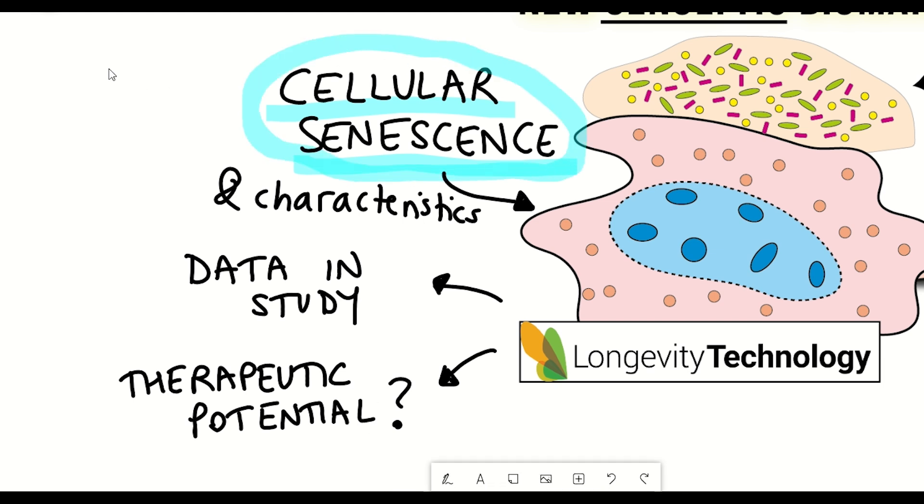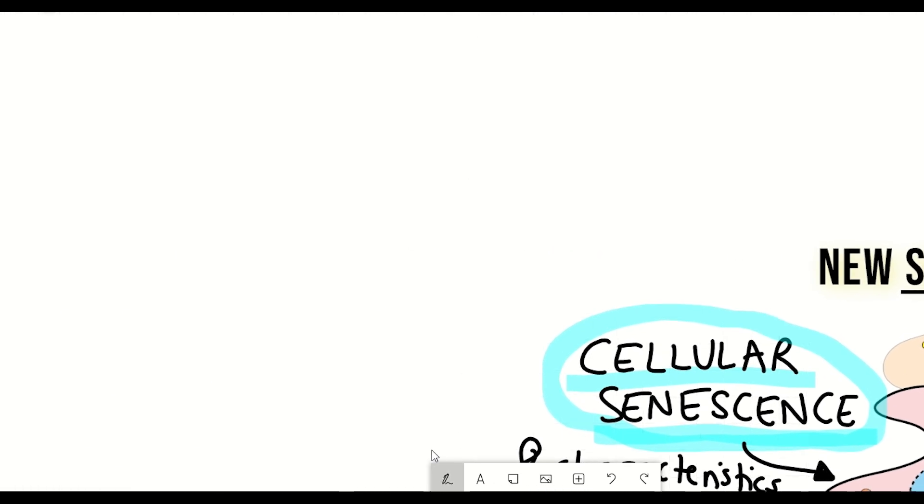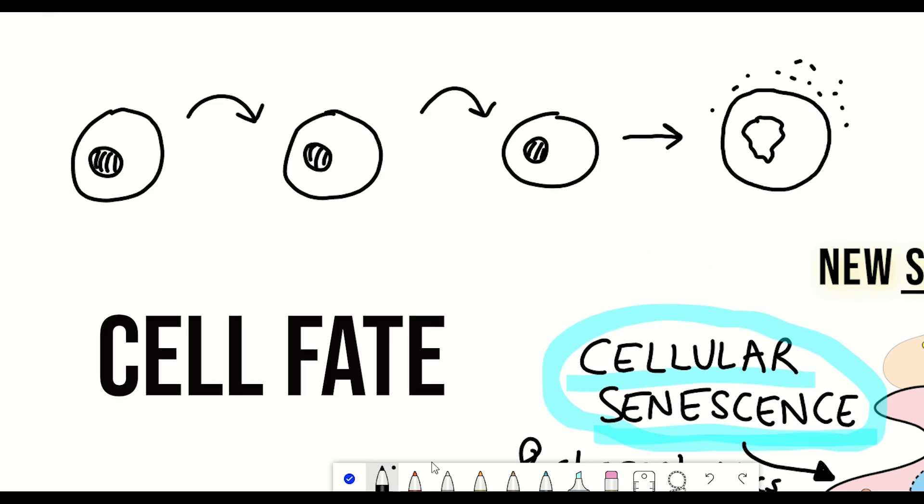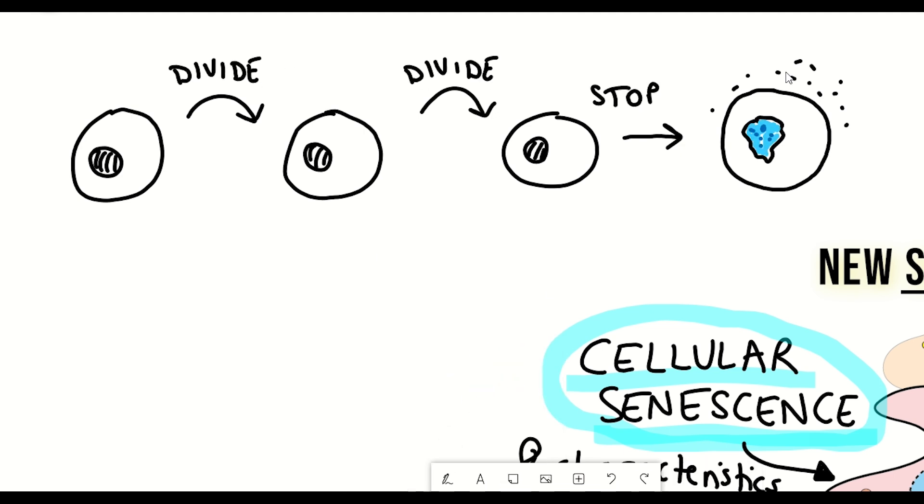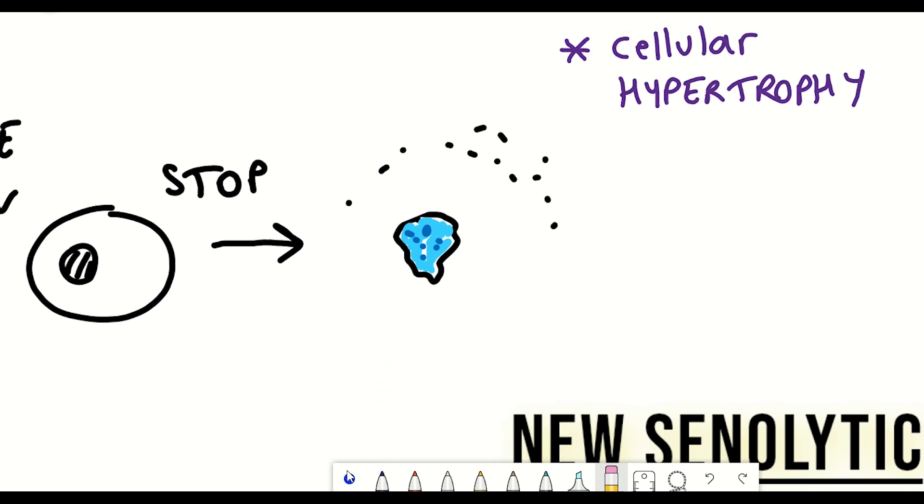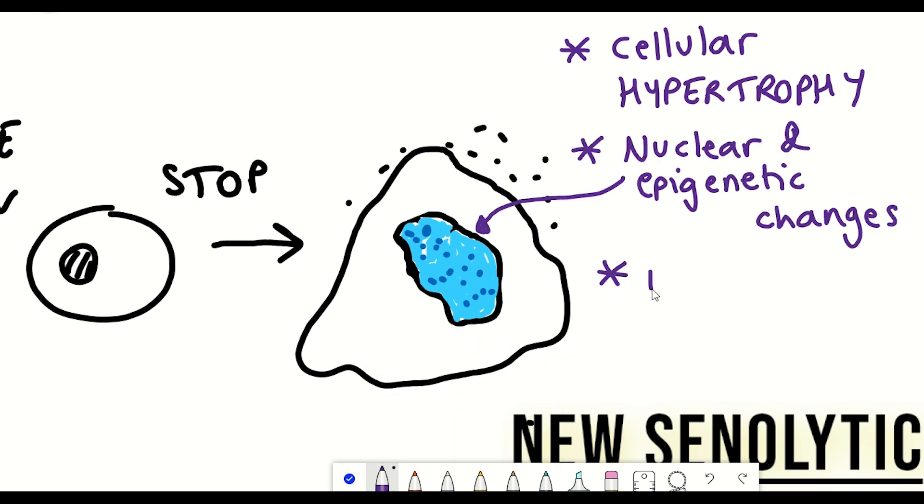So first then, what is cellular senescence? Well, cellular senescence can be thought of as a cell fate, whereby cells stop dividing and enter a permanent arrest of cell proliferation and are characterized by many phenotypic changes, including cellular hypertrophy, nuclear and epigenetic rearrangements, and metabolic alterations.